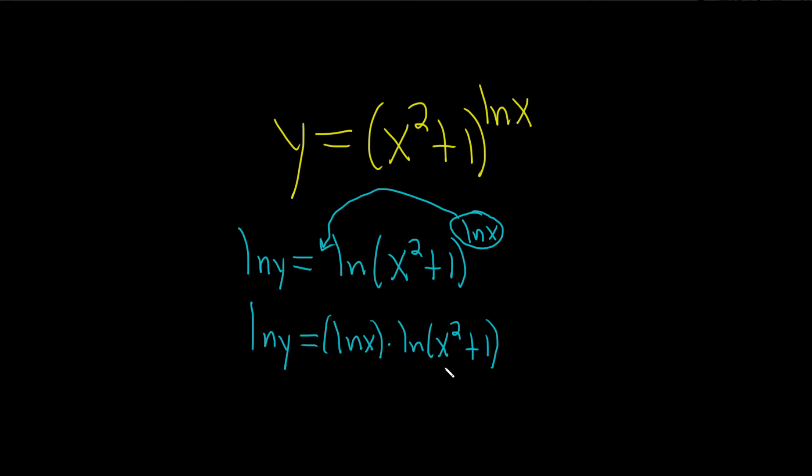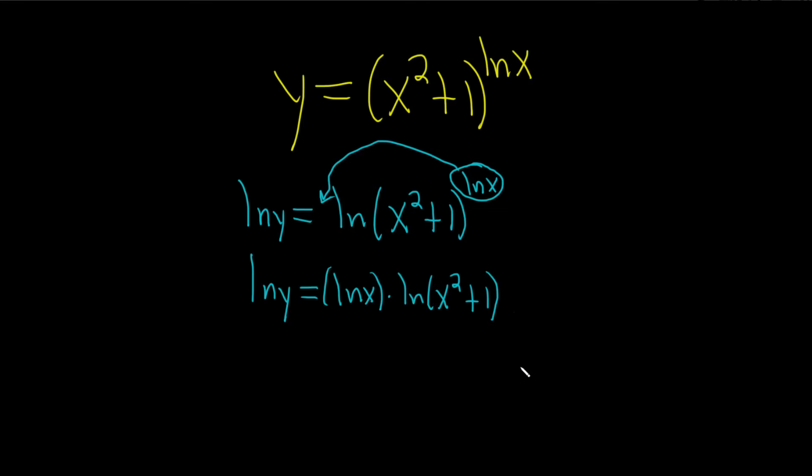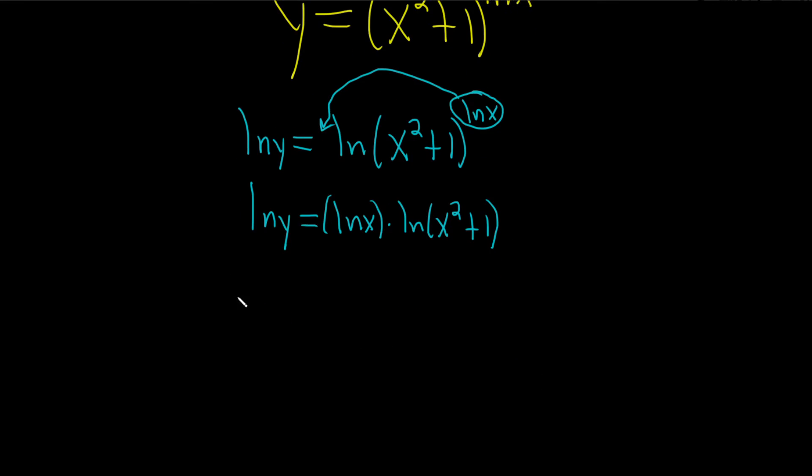All right, good stuff. So now we can take the derivative on both sides. On the left-hand side, when we take the derivative, it's 1 over y times the derivative of the inside, which is dy dx. Remember, if it's ln x, it's just 1 over x. But when it's ln y, y is a function of x, so it's 1 over y times the derivative of the function, which is just dy dx.